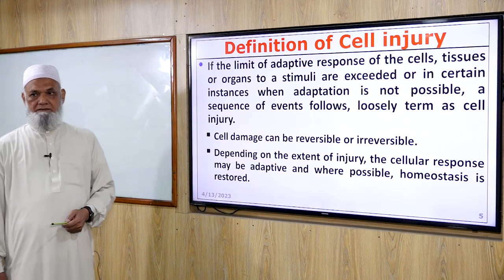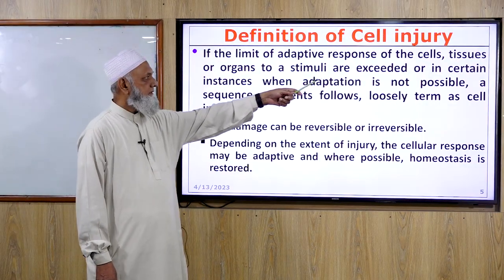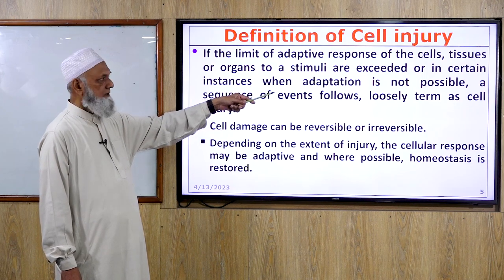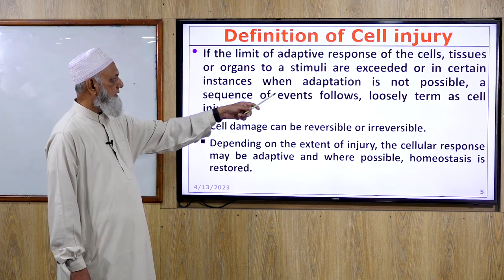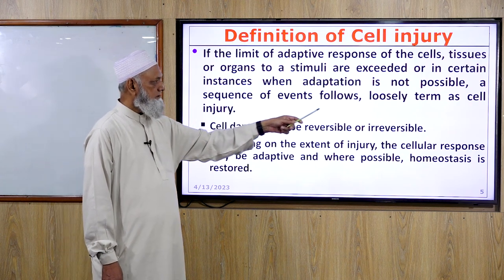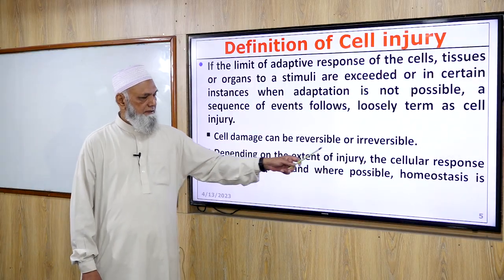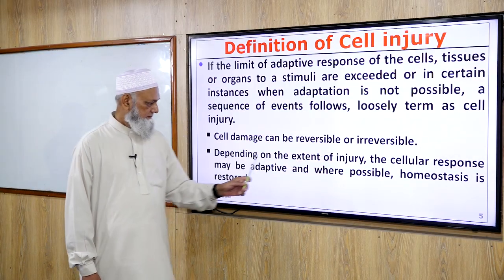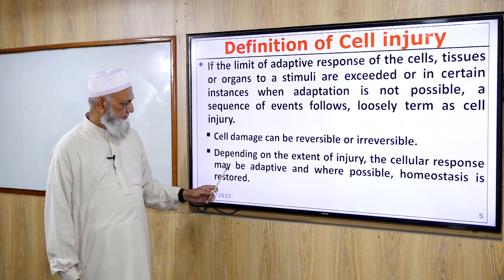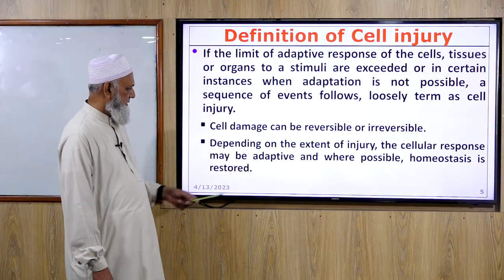Definition of cell injury: if the limit of adaptive response of the cells, tissues, or organs to a stimulus is exceeded, or in certain instances when adaptation is not possible, a sequence of events follows loosely termed as cell injury. Cell damage can be reversible or irreversible. Depending on the extent of injury, the cellular response may be adaptive and where possible homeostasis is restored.